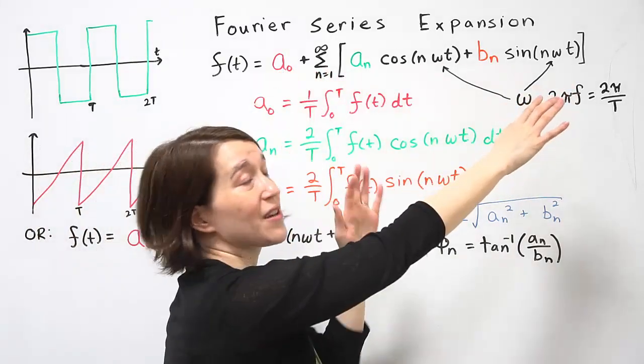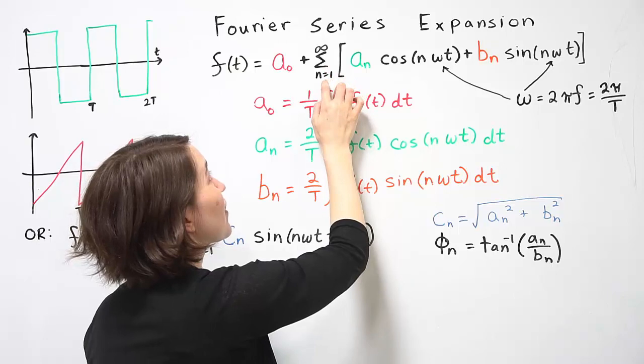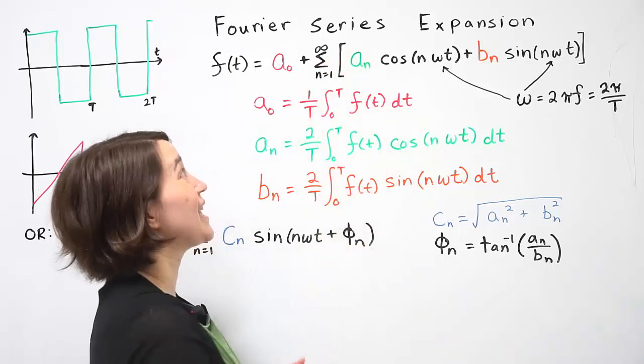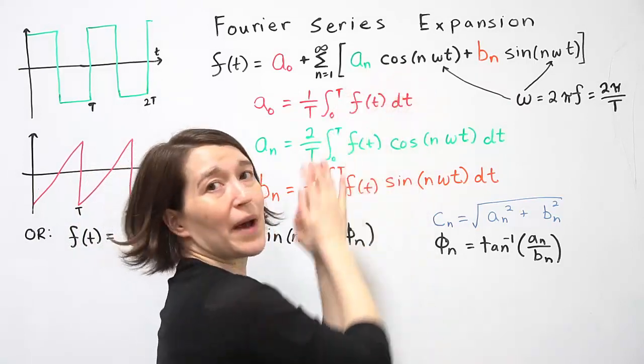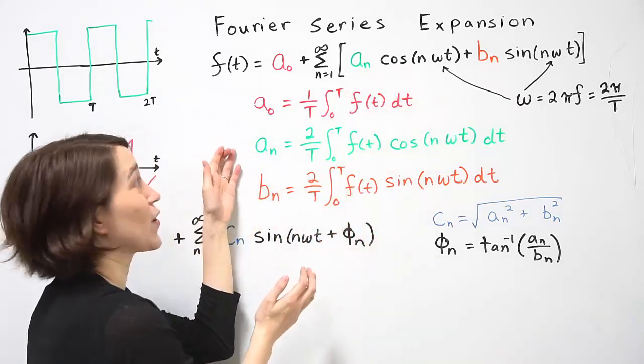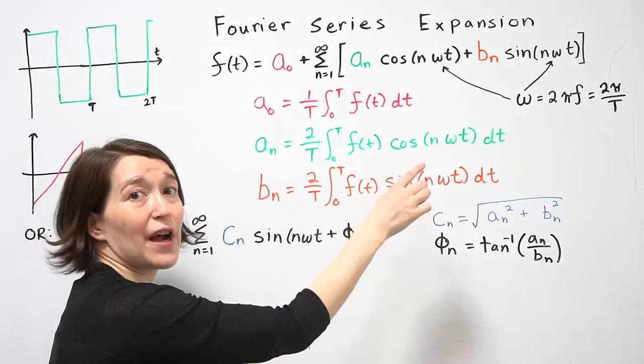Then we have many terms here, we have the series from n equals 1 to infinity, and we have a cosine term that's multiplied by aₙ. So this is the coefficient for the cosine term, and it's defined here.